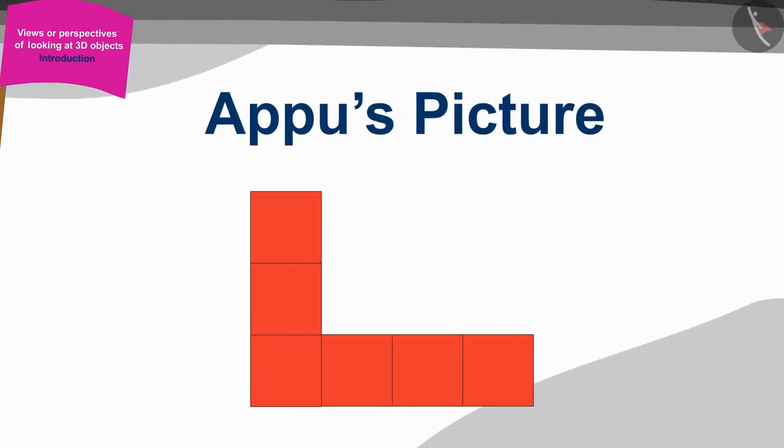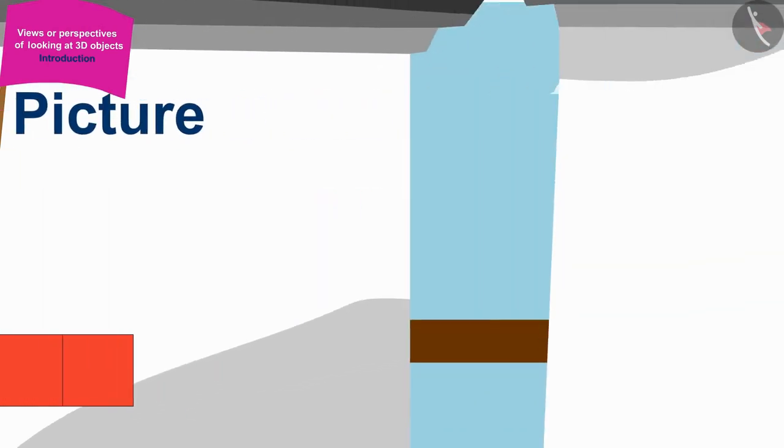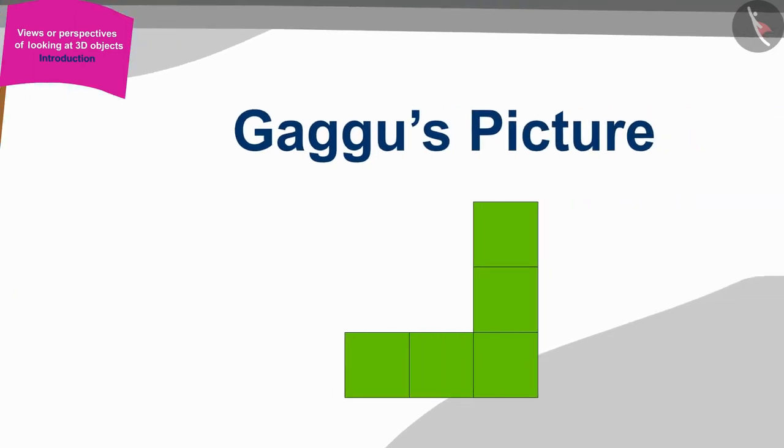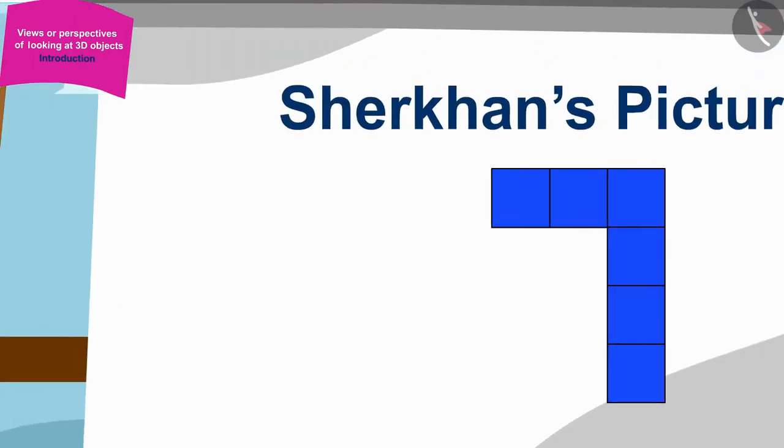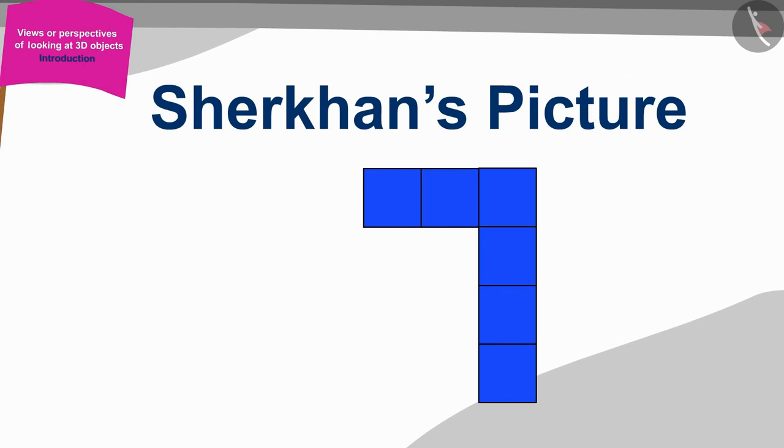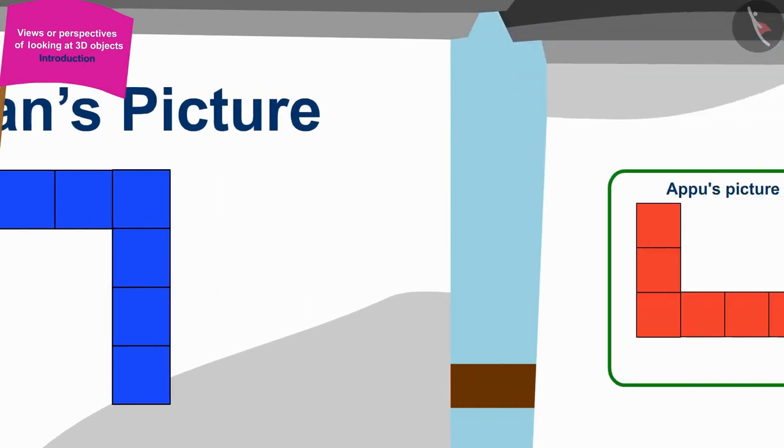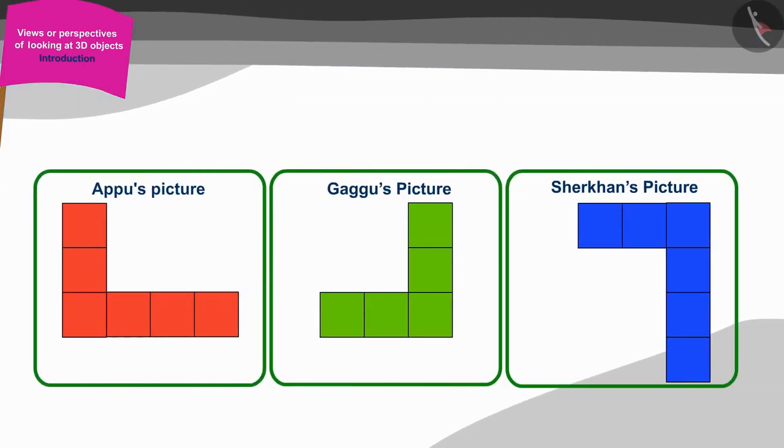Appu's picture was like this. Gaggu made such a picture and Shere Khan's picture looked like this. Children, can you tell how this can happen? When the three saw the same shape, how were their pictures so different?